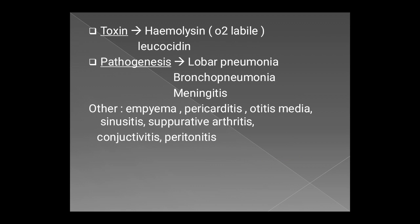Coming to the toxins: as mentioned, the oxygen-labile hemolysin is produced by pneumococci, and another toxin is leukocidin. Now coming to the main section, which is pathogenesis. The main pathogenesis produced by pneumococci is pneumonia — there may be lobar pneumonia in the lung or bronchopneumonia. It is also responsible for meningitis at any age.